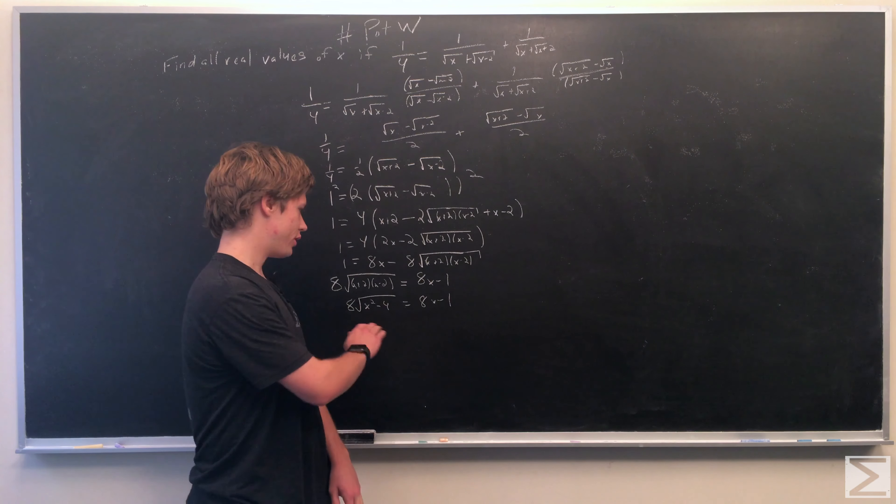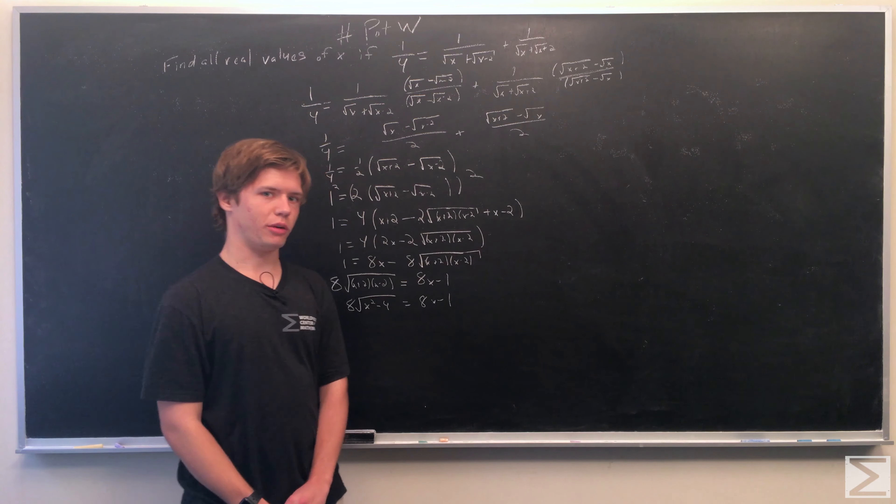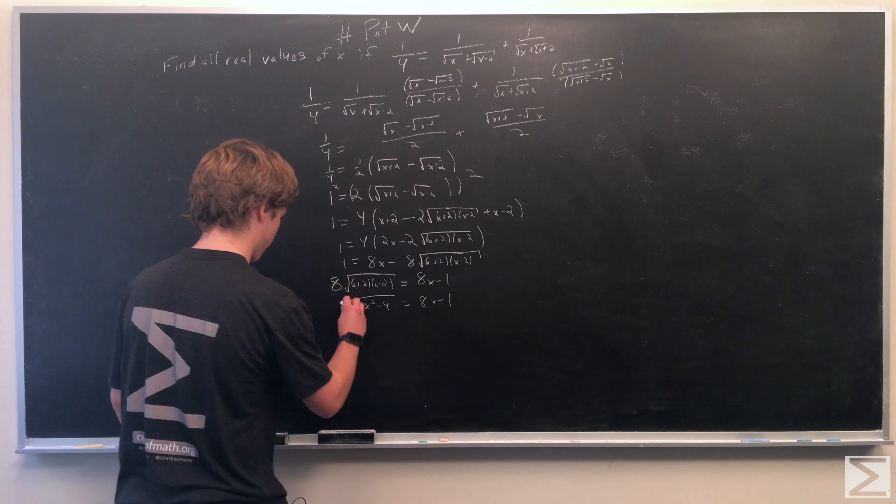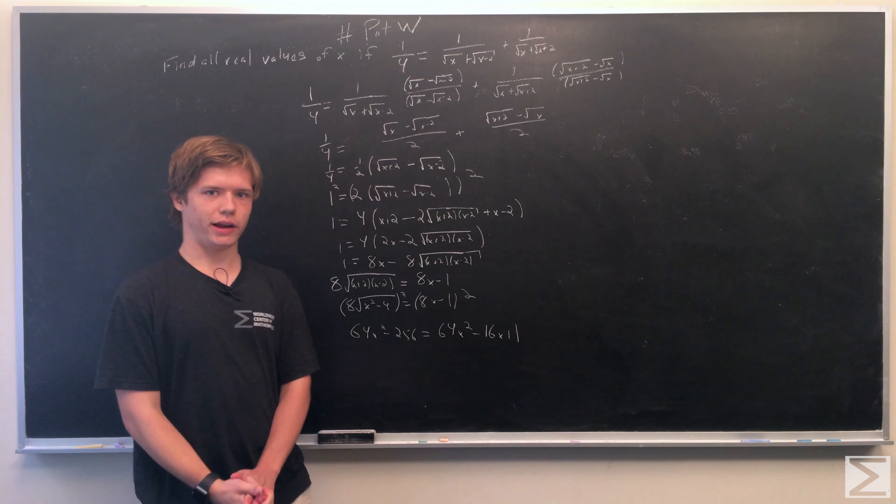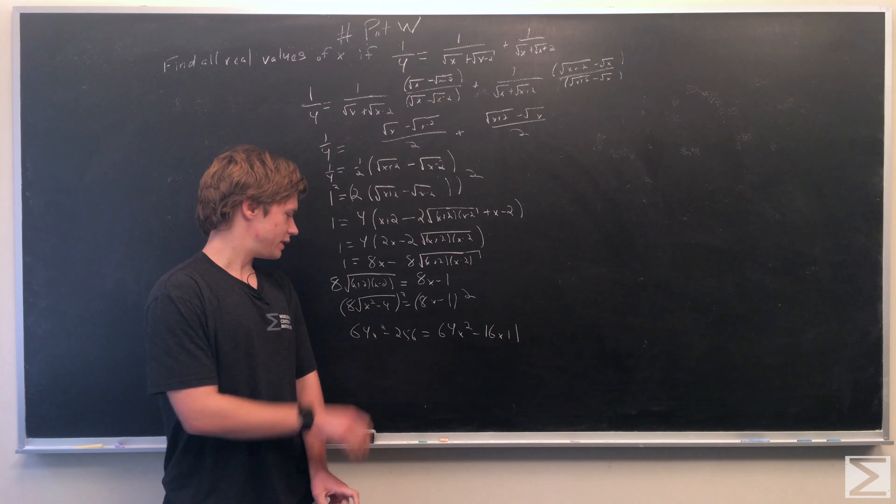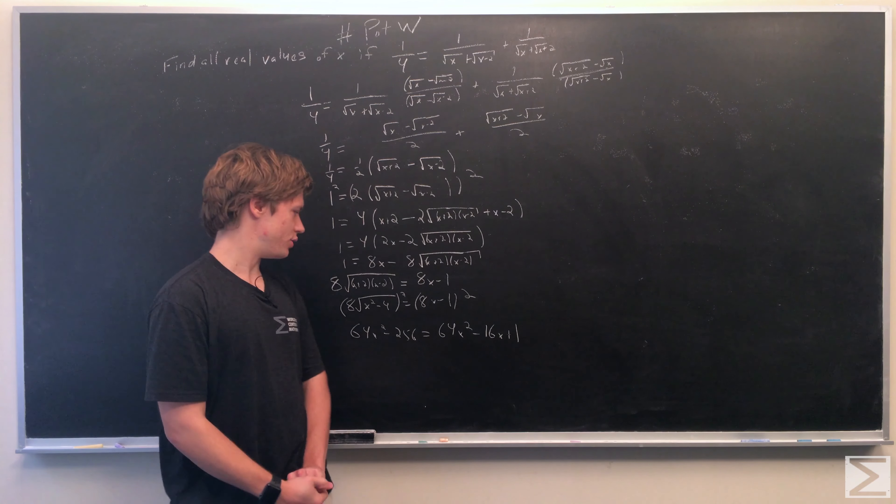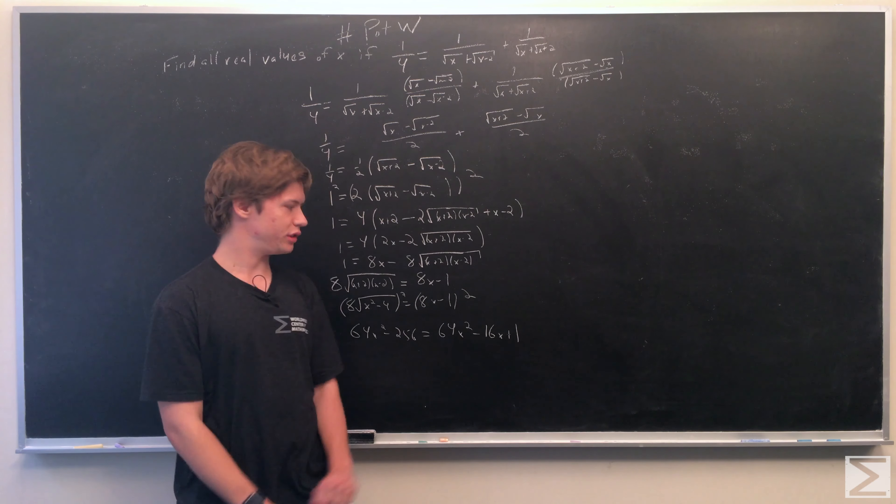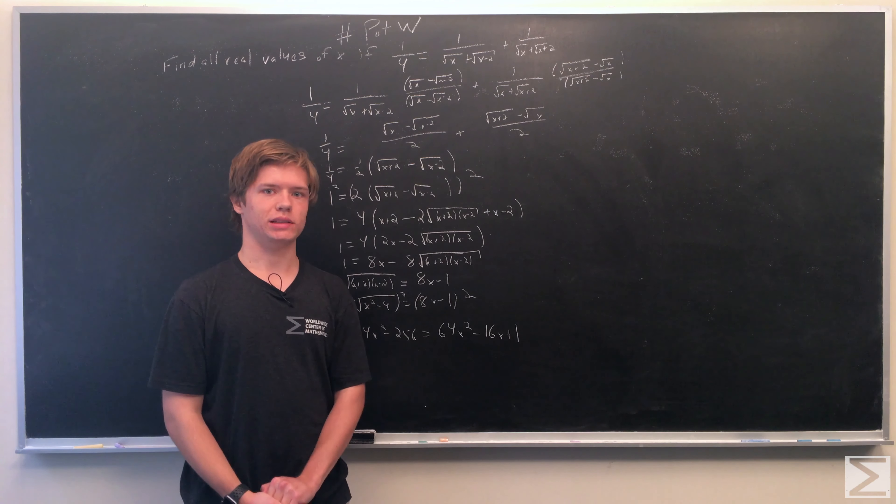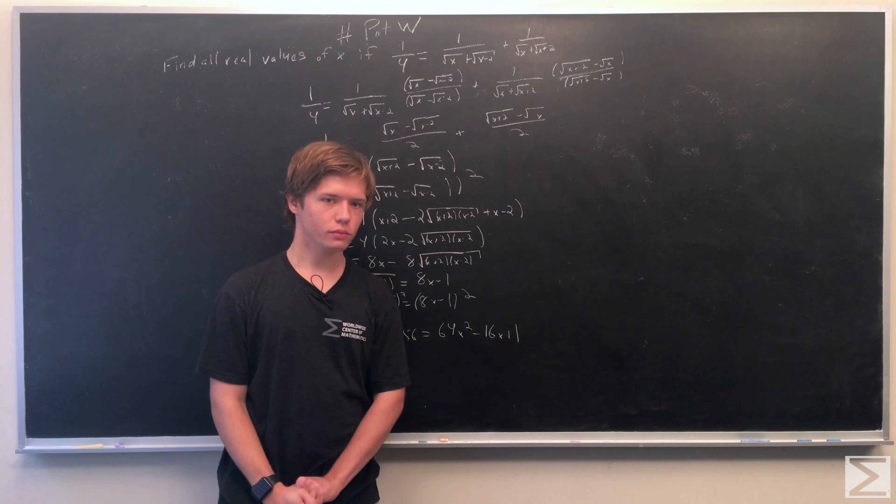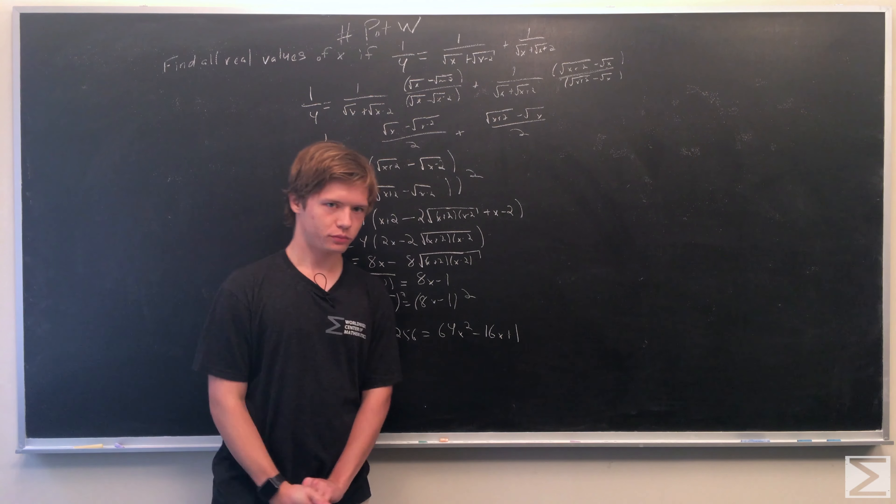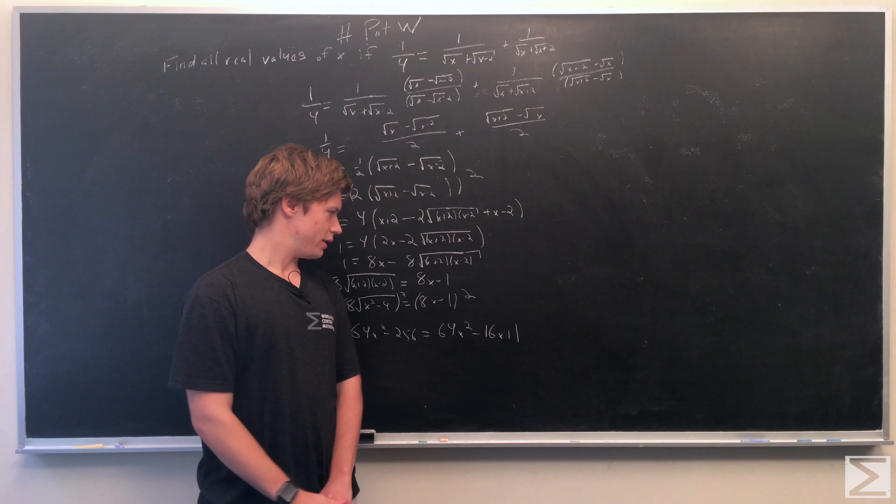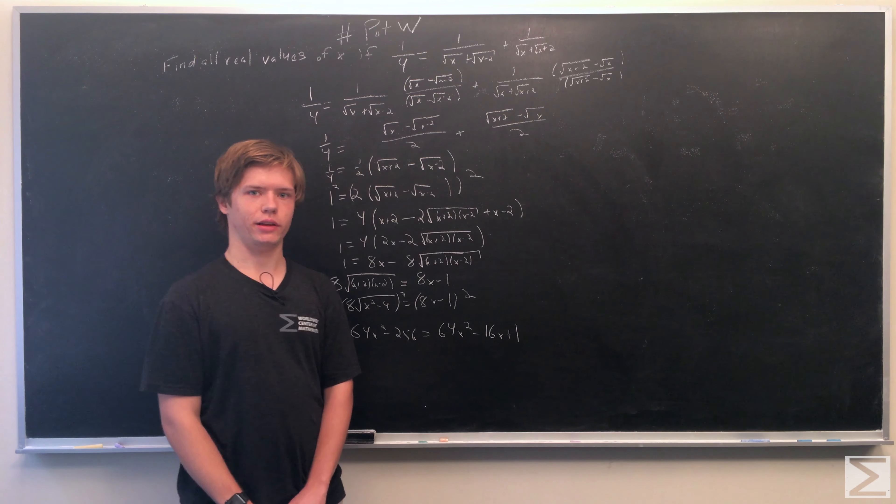To eliminate the square root, we'll square both sides again. After squaring, we get 64x² - 256 = 64x² - 16x + 1. Both sides have 64x², so they cancel out.